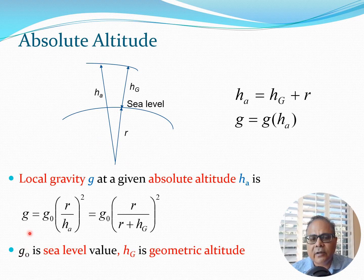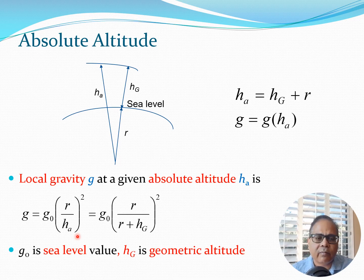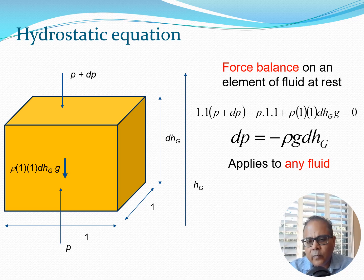The local gravity g at a given height is given by: g = g₀ · (r / h_a)². I can immediately write this as g = g₀ · (r / (r + hg))². Here g₀ is the sea level value of gravity. We most often deal with hg when talking about altitude, but remember that h_a is important because gravity is essentially related to it. If r were 0, g would be 0, but since r is not 0, we get a finite value for gravity.